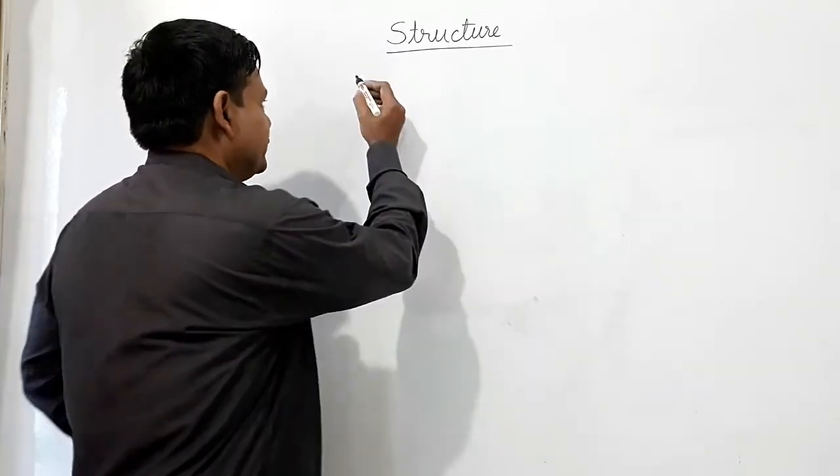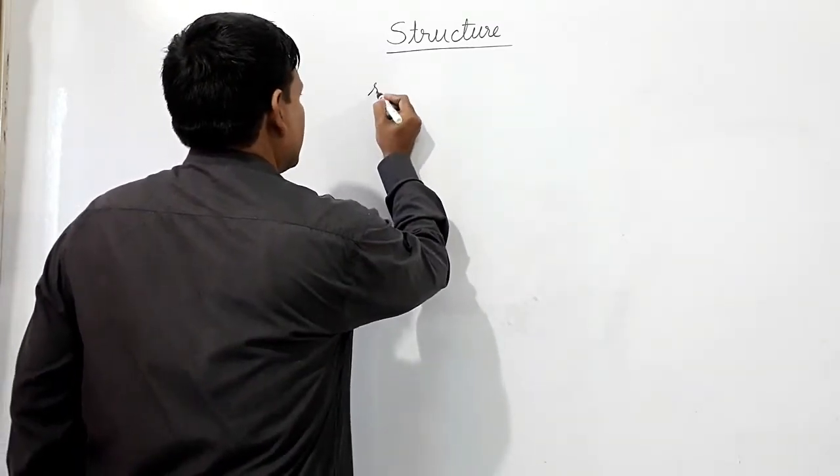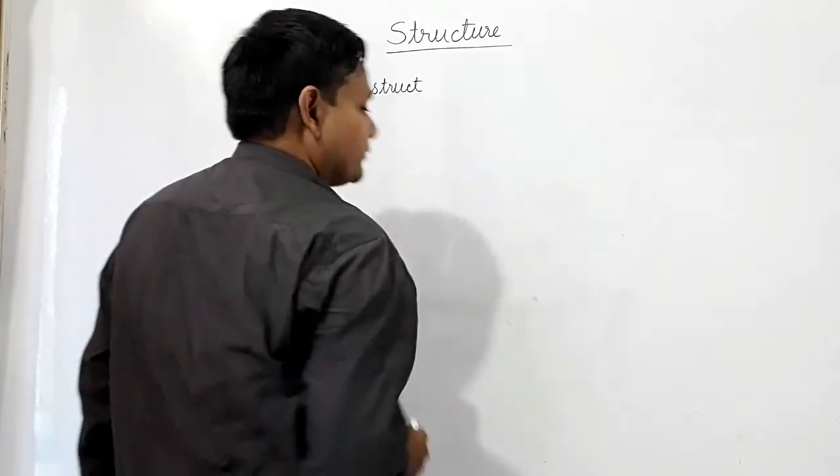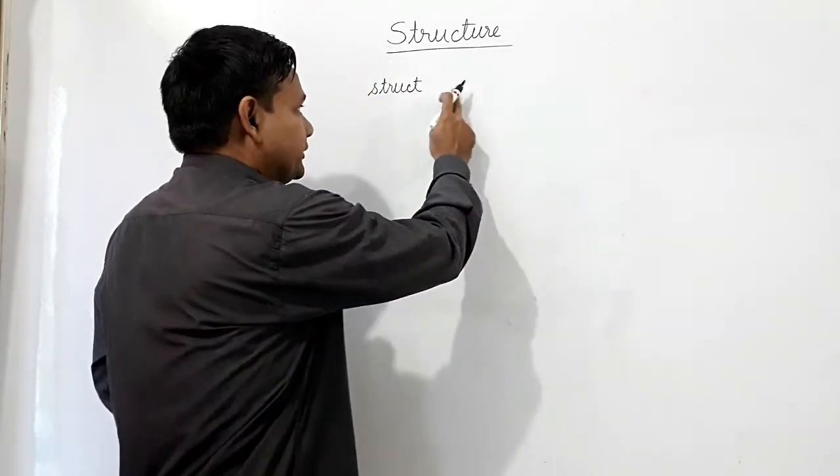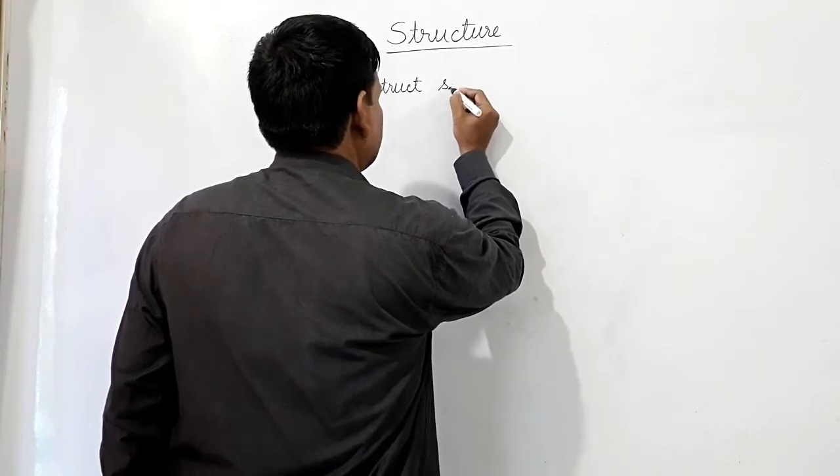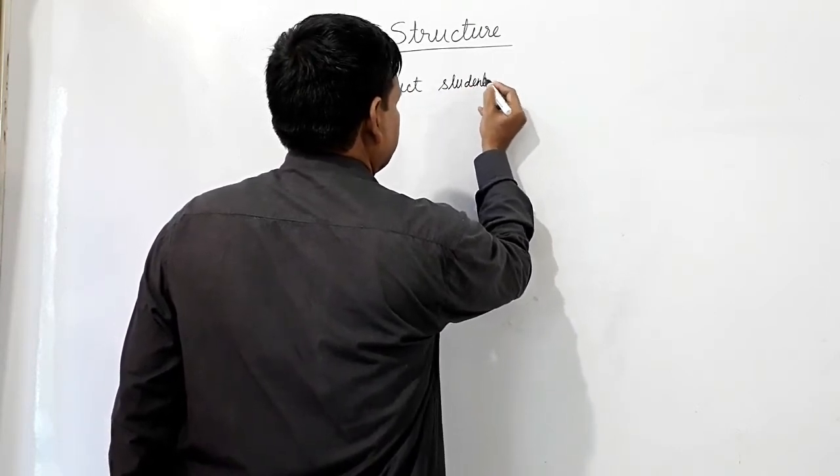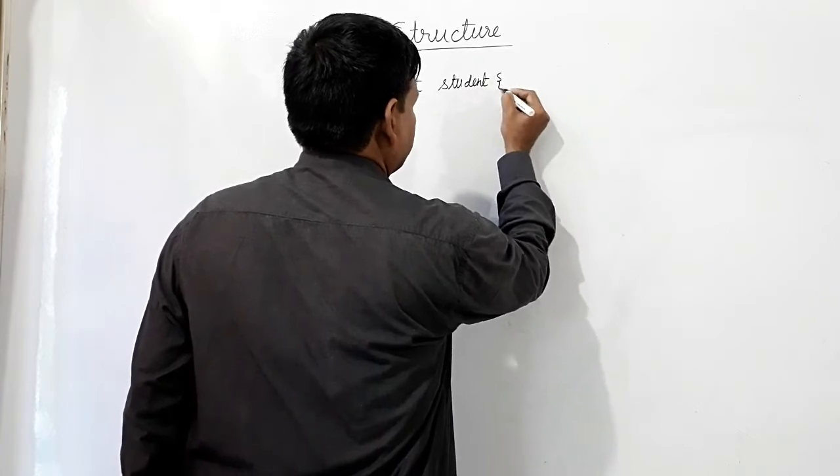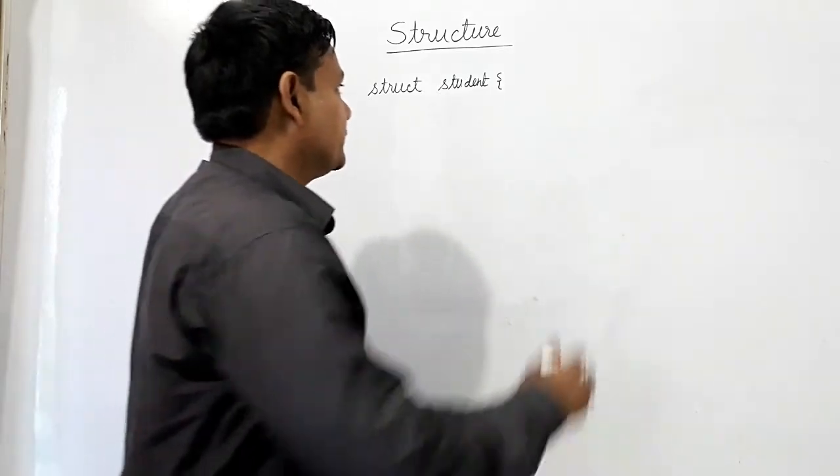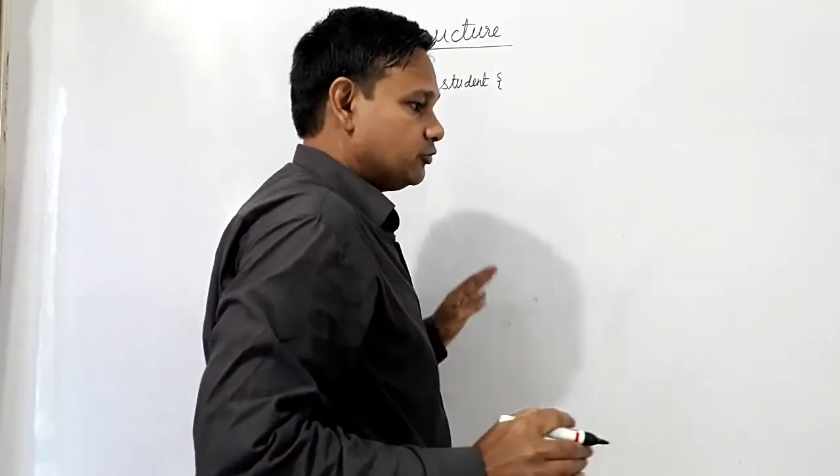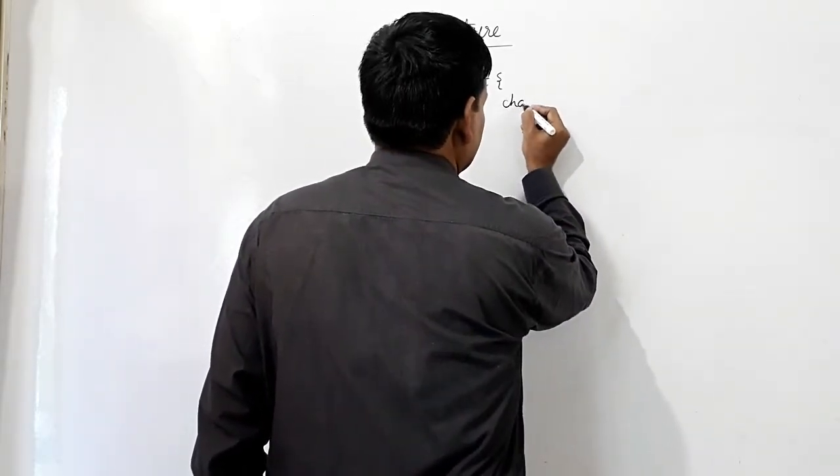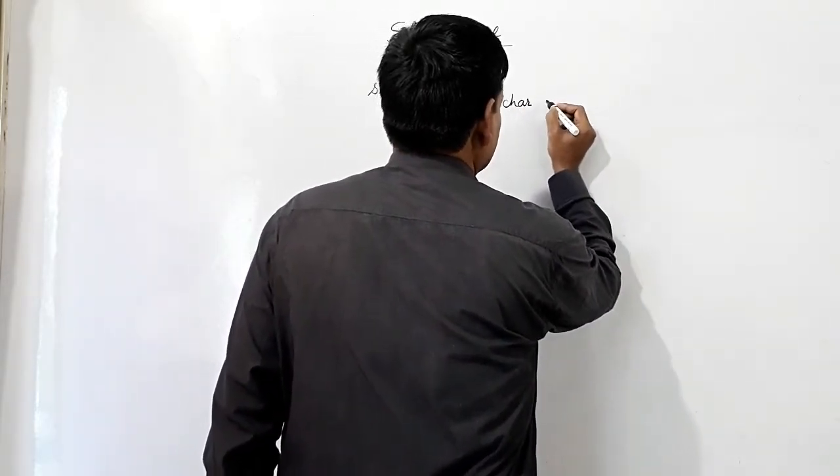How to declare structure? S-T-R-U-C-T, struct, and then name here. I will use struct student. What we need actually - student's name. So this is of string type, character, name.